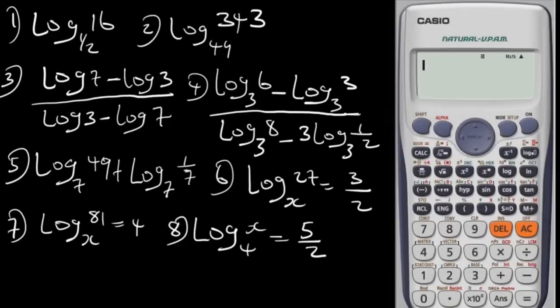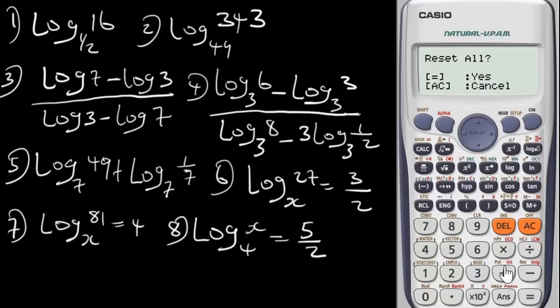This is a Casio fx-570 ES Plus calculator. The very first thing you have to do is put your calculator in default mode to clear it. The essence of doing this is to reset your calculator and wipe out whatever previous values you might have stored. To clear it, simply press Shift, then button 9, then press 1 to clear, or press 3.